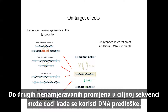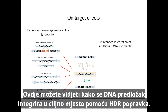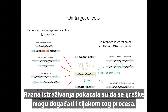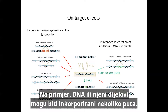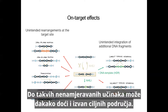Other unintended changes at the target sequence can occur when DNA templates are used. A DNA template is integrated into the target site with the help of HDR repair. Various studies have shown that errors can also happen during that process — the DNA or parts of it can, for example, be incorporated several times. Such unintended effects can of course also occur in off-target areas.